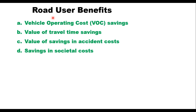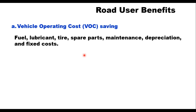In terms of benefits, there are two broad types: road user benefits and societal benefits. Road user benefits include vehicle operating cost saving, saving in value of travel time, saving in accident cost, and saving in societal cost. Vehicle operating cost has several components: fuel, lubricant, tire, spare parts, maintenance, depreciation, and fixed costs such as insurance, taxes, and interest on loans — which do not change with the type of highway.